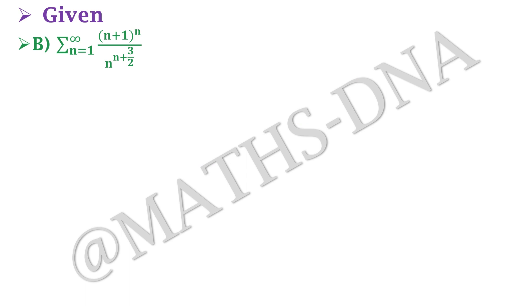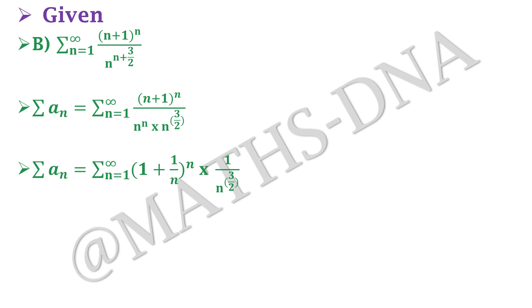Moving on to option (b): summation n from 1 to infinity of (n+1)^n / (n^n · n^(3/2)). We follow the same method. We let aₙ = (n+1)^n / (n^n · n^(3/2)), split the powers, and take (n+1)/n as common to get Σ [1/(1+1/n)^n] · (1/n^(3/2)). We do this because we know the value of (1+1/n)^n.